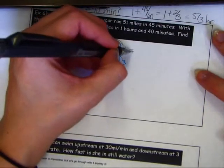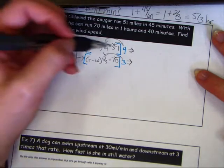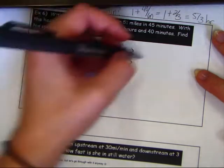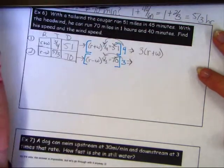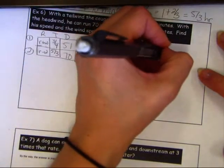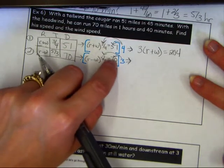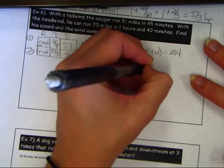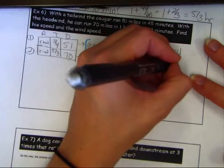Rewriting the equations: 3/4 times 4 is 3, so we get 3(r + w) = 204. Distributing the 3 into 5/3 gives 5, so we get 5(r − w) = 210.